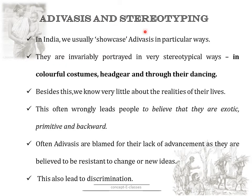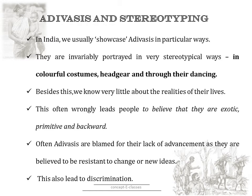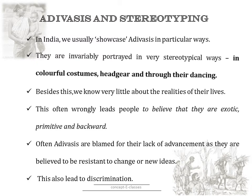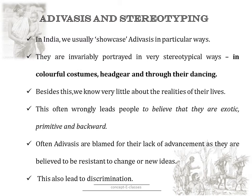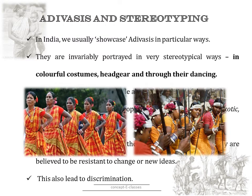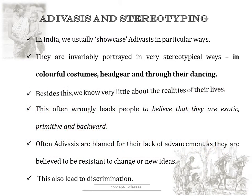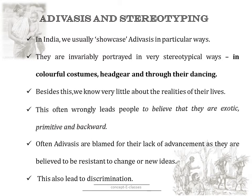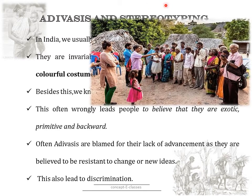Now let's talk about Adivasis and stereotyping. Stereotyping means how we represent or view Adivasis. In India, we usually showcase Adivasis in particular ways — for example, in school functions, official events, books and movies, Adivasis are invariably portrayed in stereotypical ways: in colourful costumes, headgears, and through their dancing. Besides this, we know very little about their lives. This often wrongly leads people to believe they are exotic, primitive and backward. Adivasis are often blamed for their lack of advancement, as they are believed to be resistant to change or new ideas, and this has led to discrimination.